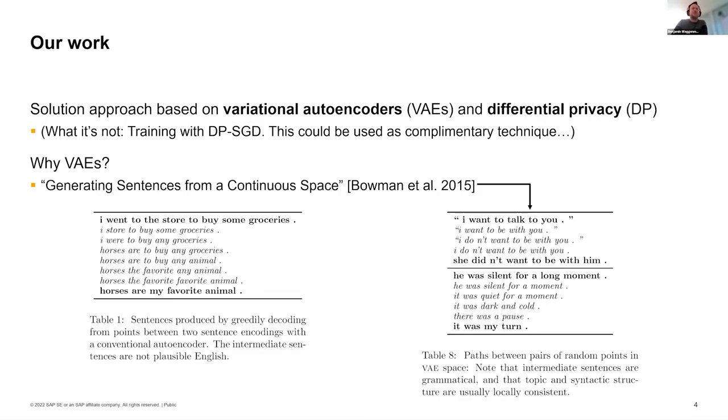In our work, we try to synergetically combine variational auto encoders, which is a type of neural network and differential privacy. What it's not - for those who know differential privacy in the context of machine learning, a famous technique is training machine learning neural networks with differentially private stochastic gradient descent. This makes the training differentially private. This is not what we are going to do in this talk with variational auto encoders. But this could be used as a complementary technique.